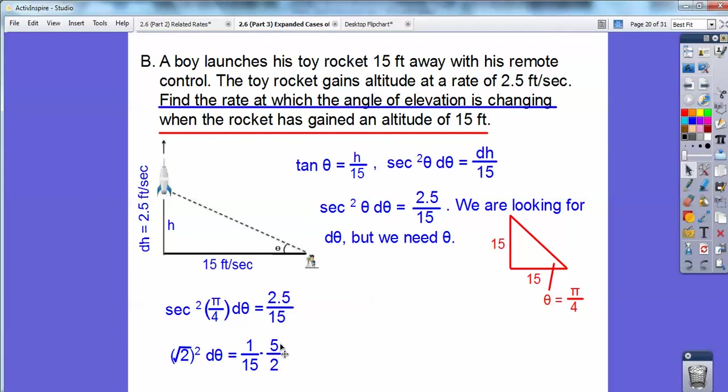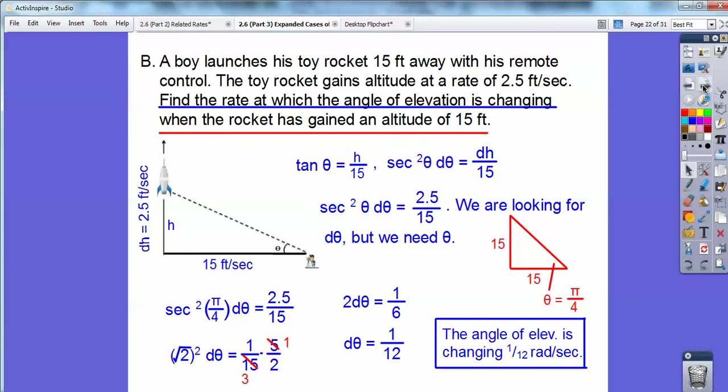I changed 2.5 to 5 halves. There's my 2.5 right there. And then 5 goes into 15 three times, so this is actually 1 sixth. Over here I get 2 d theta because root 2 squared is 2. So I get d theta to be 1 12th. And that's what I'm looking for is d theta, so let's put it in the context. The angle of elevation is changing 1 12th of a radian per second.